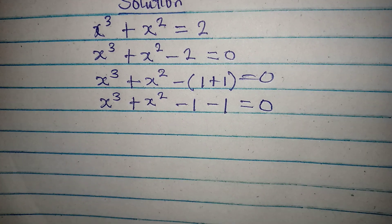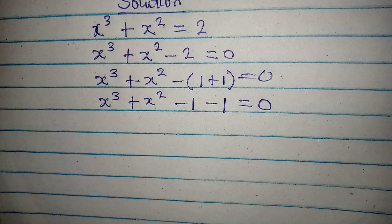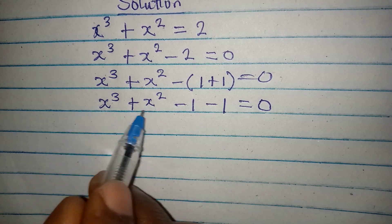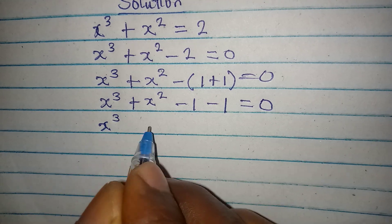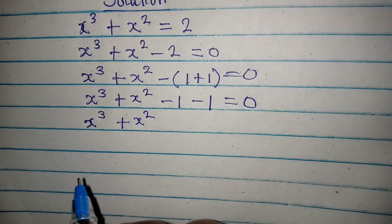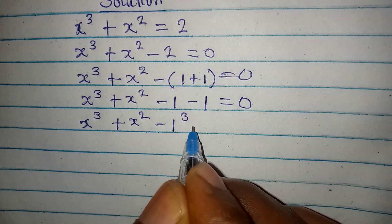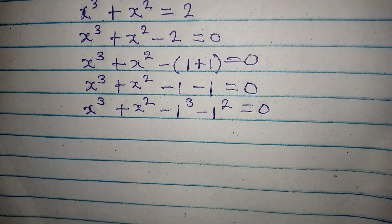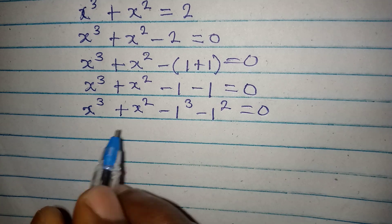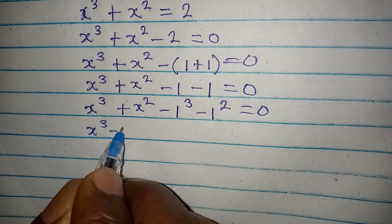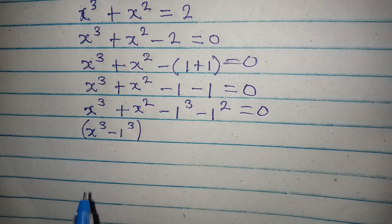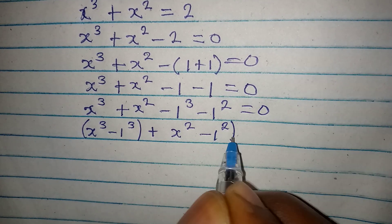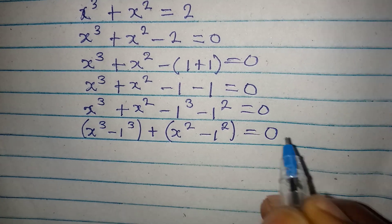So from here, we can now begin to arrange this — making the constants into powers so they can be similar to the first two terms. So we have x to the power of 3 plus x to the power of 2 minus 1 to the power of 3 minus 1 to the power of 2 equal to 0. From here, we can compare the cubic terms and compare the squared terms. So we are going to have x to the power of 3 minus 1 to the power of 3, which we will factorize, plus x to the power of 2 minus 1 to the power of 2, and everything is equal to 0.